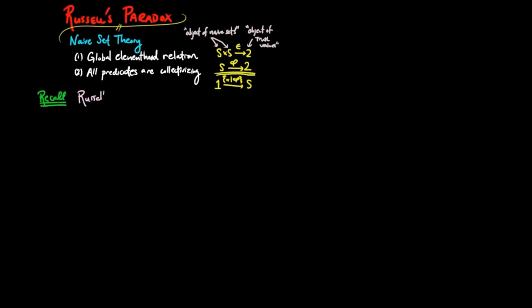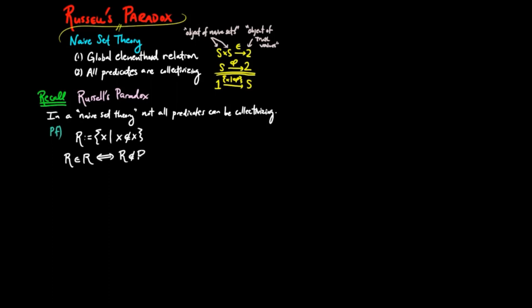Let's briefly recall Russell's paradox. It states that in a naive set theory not all predicates can be collectivizing. In the proof we assume all predicates are collectivizing. Then Russell constructed the set R of all sets which don't contain themselves. Then we have R is an element of R if and only if R is not an element of R, giving us a contradiction.